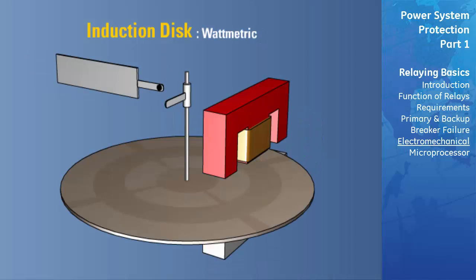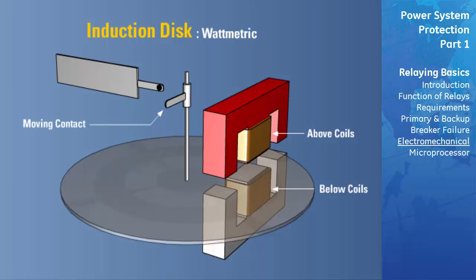Watt metric: This style uses one set of coils above the disc and another set of coils below the disc. In either case, the moving contact is carried on the rotating shaft of the disc element. The induction disc style of relay is always used as a time delay element because of the inertia of the moving disc. The time delay feature is added by means of a permanent magnet. The disc rotating between the poles of this magnet causes an induction drag.